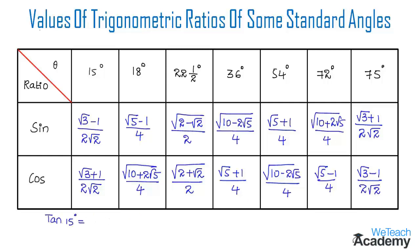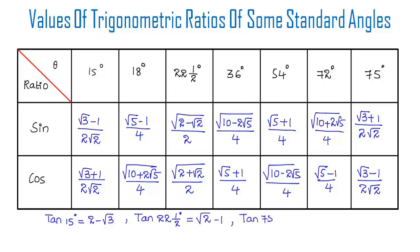Also note that tan 15° = 2 − √3, tan 22.5° = √2 − 1, and tan 75° = 2 + √3. Learn all these formulas as they are useful in solving examples on trigonometry. Hope you understood the concept — refer to more videos on trigonometry on our website vtchecademy.com. Thanks for watching, have a nice day.